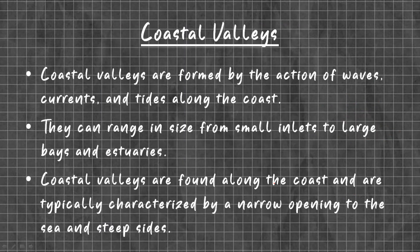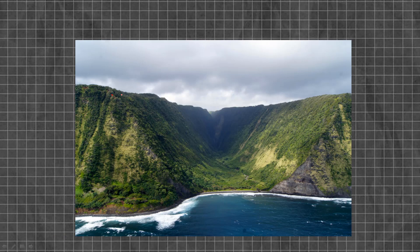Coastal valleys are formed by the action of waves, currents, and tides along the coast. They can range in size from small inlets to large bays and estuaries. Coastal valleys are typically characterized by a narrow opening to the sea and steep sides. As you can see in this picture, these are mountains with a U-shape and there is only an opening towards the sea or ocean — these are called coastal valleys.